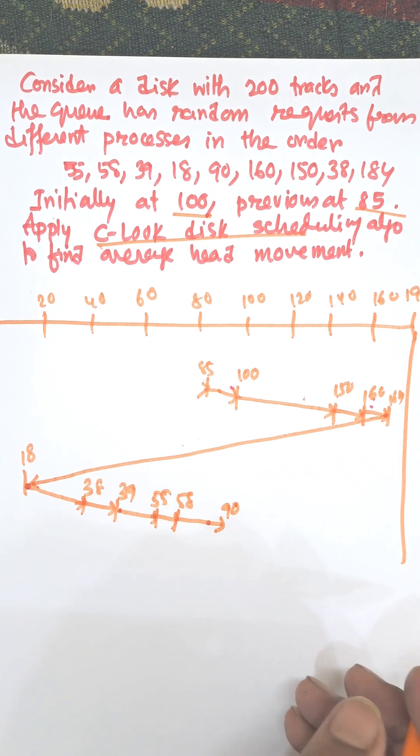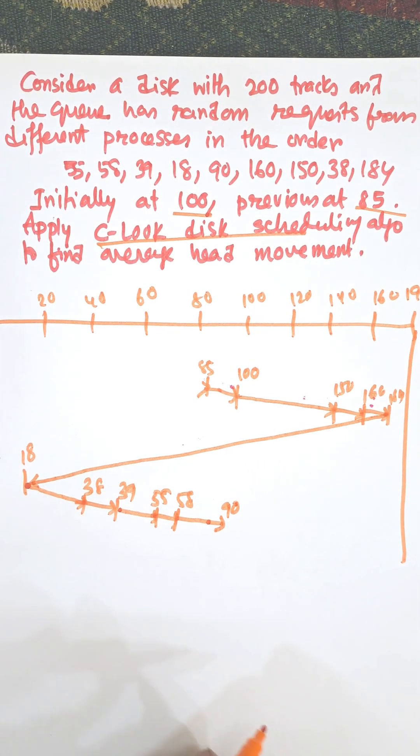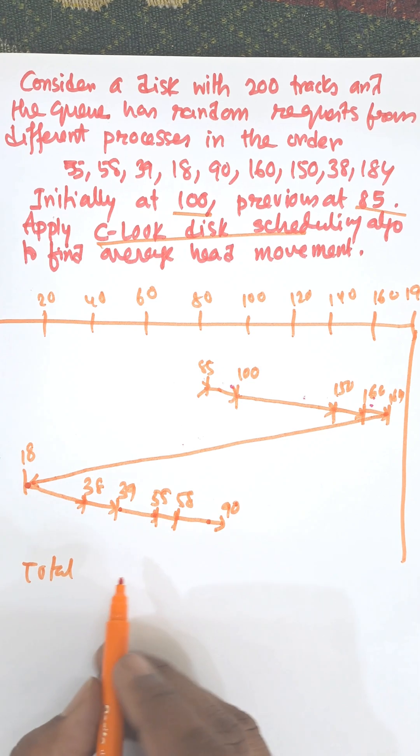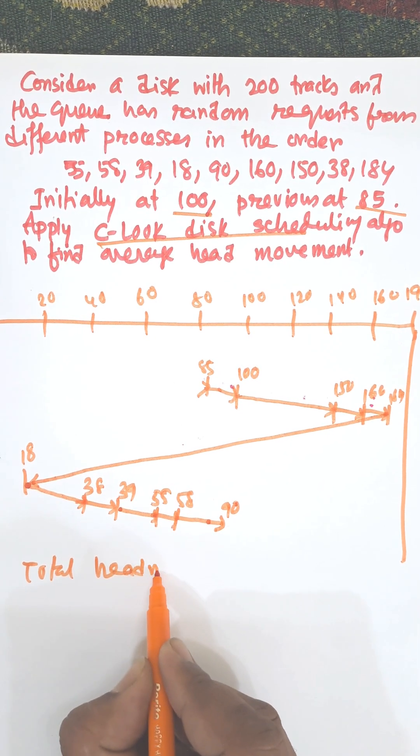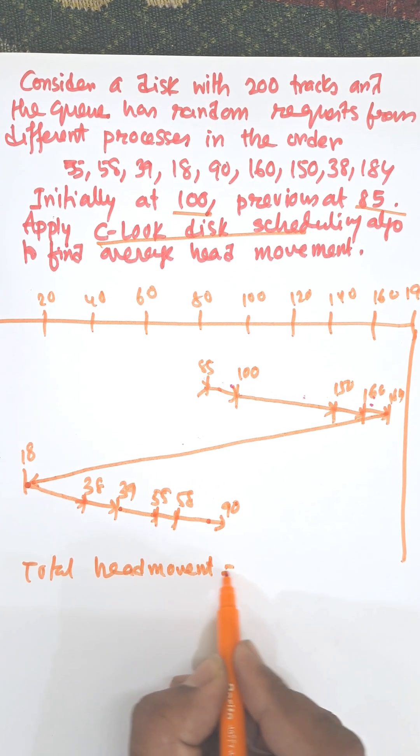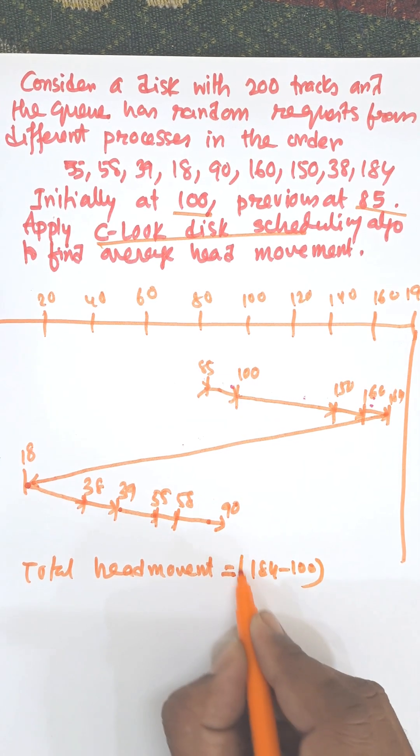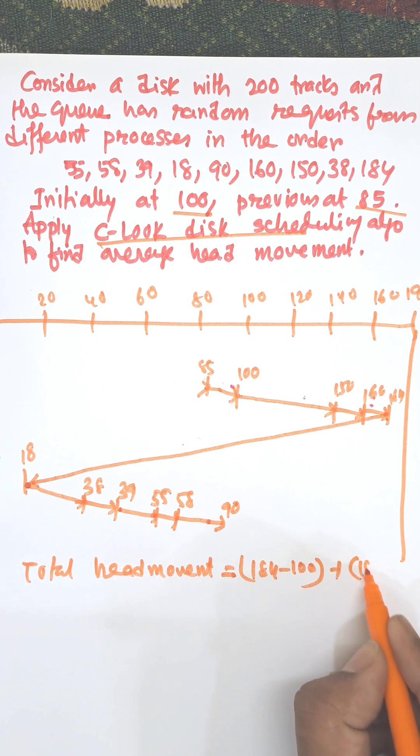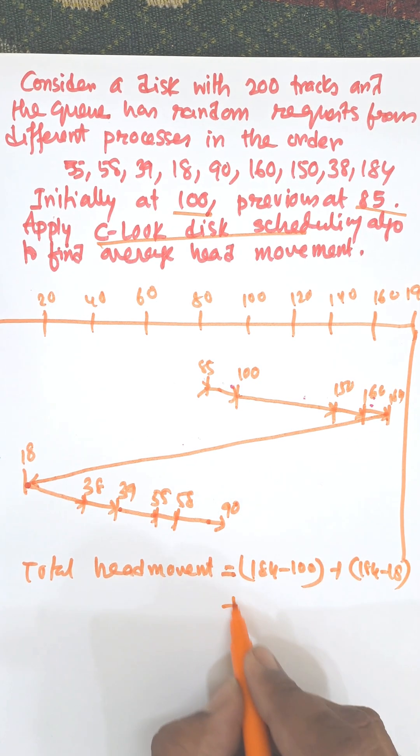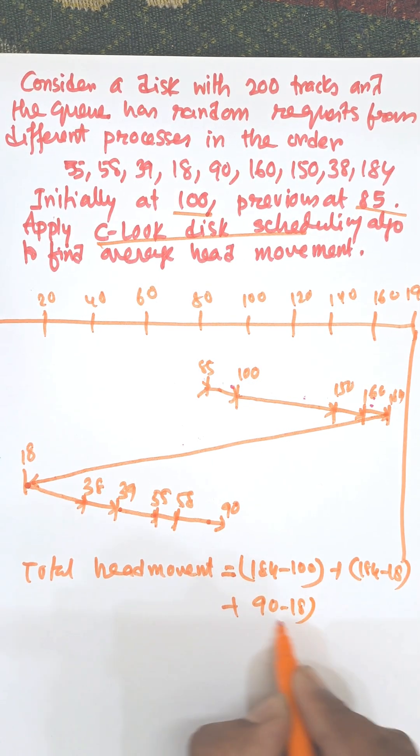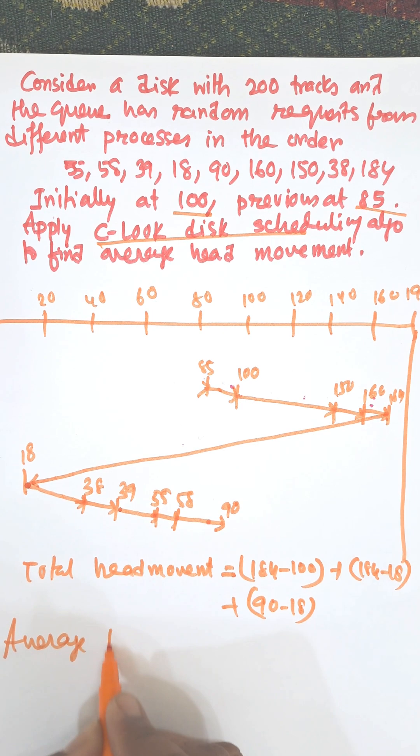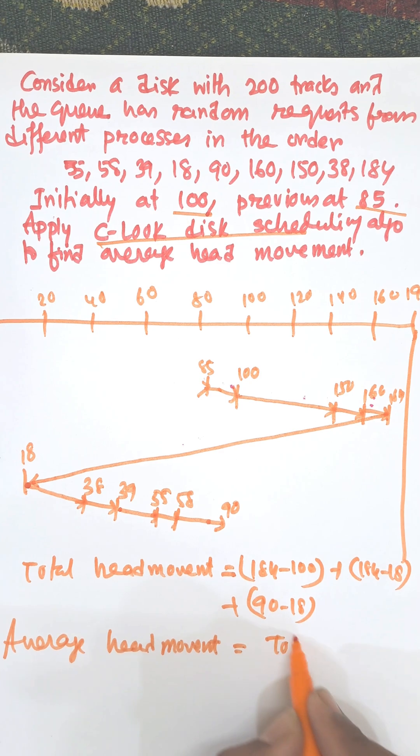And this is the last number, that is 90. Now, total head movement—the average head movement equals total head movement divided by number of requests.